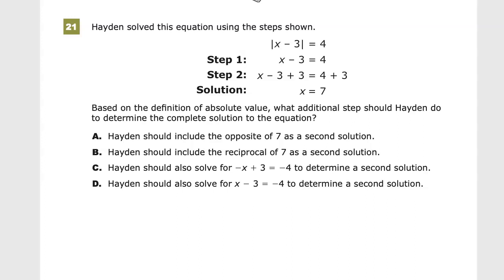Algebra 1 practice test for TNready, this is question 21. Hayden solved this equation using the steps shown: the absolute value of x minus 3 is equal to 4.